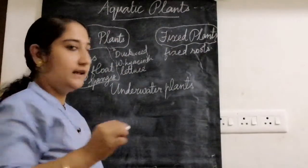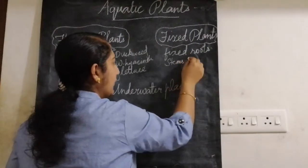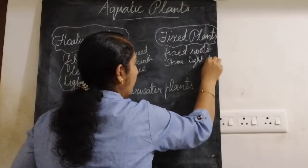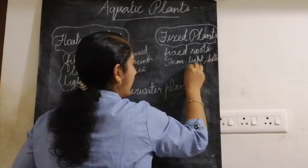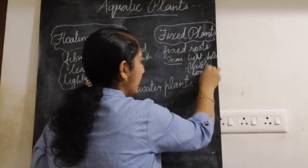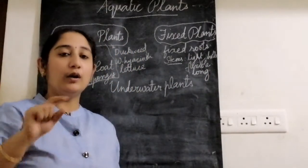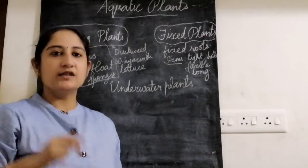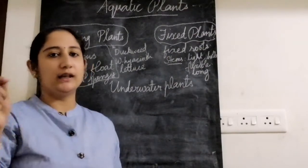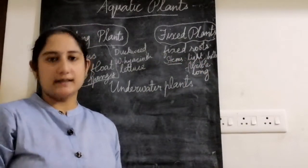Another speciality of fixed plants is about their stems. The stems are long, light, hollow, and flexible. This allows them to move according to the waves of the water without uprooting — that is why they have these specialized stems.